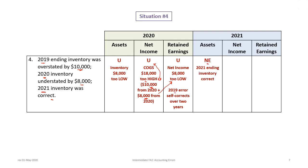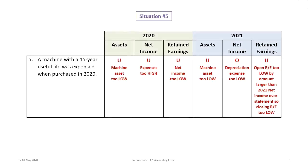Shifting to 2021, assets are fine — the inventory errors self-correct over two years. However, net income is overstated because the $8,000 inventory expensed in 2020 should have been expensed in 2021, making cost of goods sold understated. Retained earnings are okay because that 2020 error self-corrects over two years, and there is no problem with 2021 inventory or cost of goods sold.